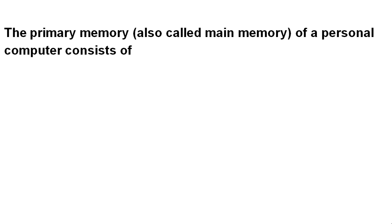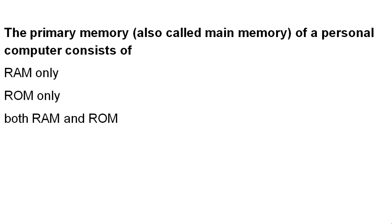The primary memory, also called main memory, of a personal computer consists of: RAM only, ROM only, both RAM and ROM, or Cache memory?